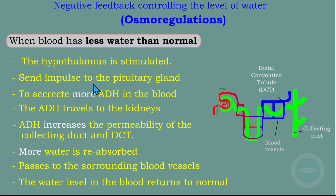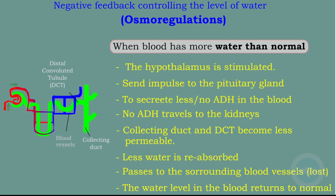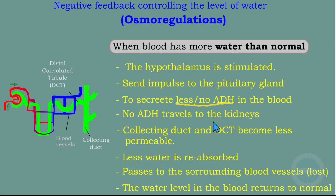The opposite situation is when blood has more water than normal. In this case, the hypothalamus is stimulated and sends an impulse to the pituitary gland to secrete less or no ADH into the blood. No ADH travels to the kidney, and the collecting duct and distal convoluted tubules become less permeable.